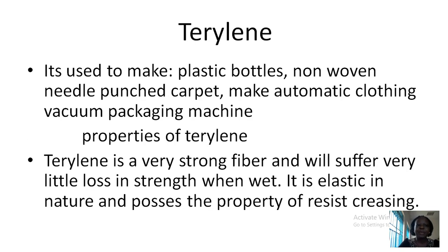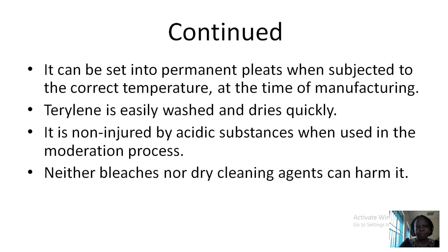Then we have Terylene, used to make plastic bottles, nonwoven needle-punched carpets, automatic clothing and vacuum packaging machines. What are the properties of Terylene? It is a very strong fiber. It will suffer very little loss in strength when wet. It is elastic in nature and possesses the property of resist grazing. It can be set into permanent pleats when subjected to the correct temperature at the time of manufacturing. Terylene is also easily washed and it dries quickly. It is non-injured by acidic substances when used in the modern process. It also doesn't bleach when you subject it to cleaning agents.